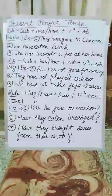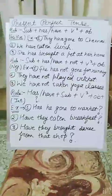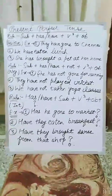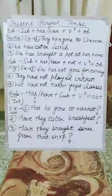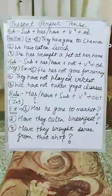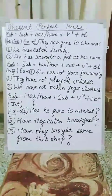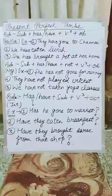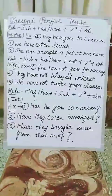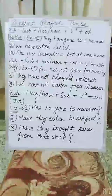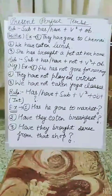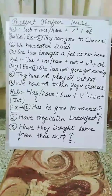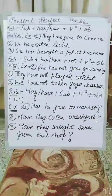Now let's look at the third type: interrogative sentences, where a question mark is always necessary. In interrogative sentences, the rule starts with has/have — the helping verbs act as question words. The rule is: has/have plus subject plus verb's third form plus object plus question mark. For example: 'Has he gone to market?' Here, 'has' acts as both the question word and the helping verb, 'he' is the subject, 'gone' is the verb's third form, and 'market' is the object.